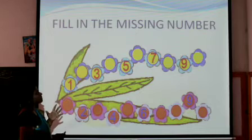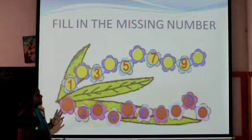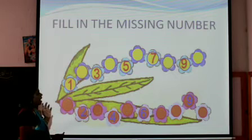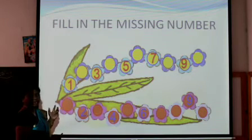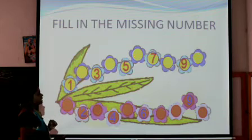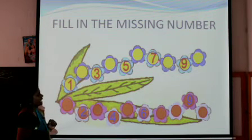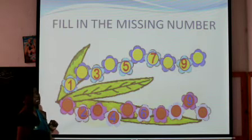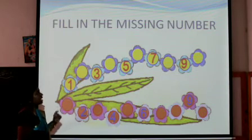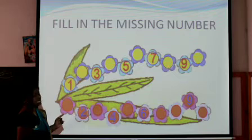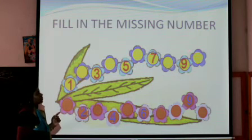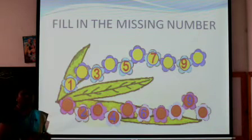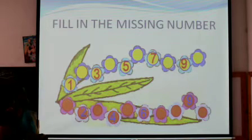Next is five, then an empty circle, then seven. What comes in between? After five comes six and before seven also comes six, so we write six there. Now we have seven and nine with something to fill in between. After seven comes eight and before nine comes eight, so you're going to write eight in that circle.